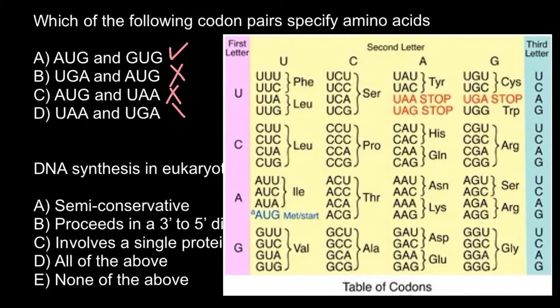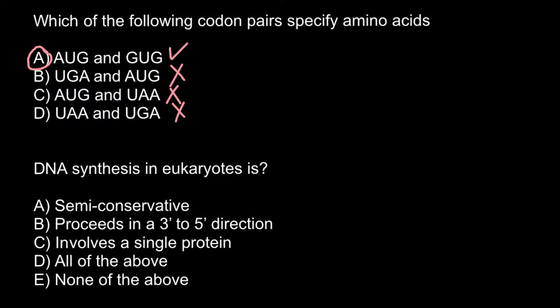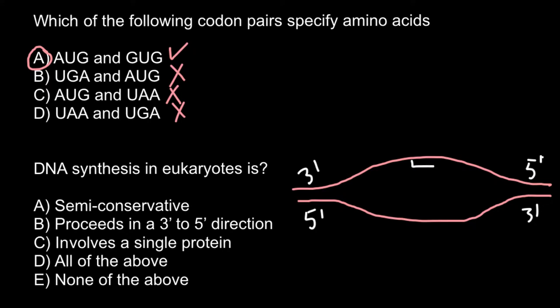And next question: DNA synthesis in eukaryotes is. And we have to choose the correct answer. Imagine that this is double-stranded DNA and here we have replication bubble. Let's say that here we have 5 prime and 3 prime and here 3 prime and here 5 prime. So basically replication would start as two DNA strands would separate and RNA primer would be added to both strands of the DNA.